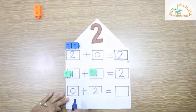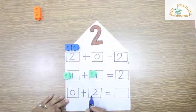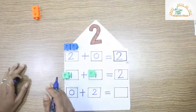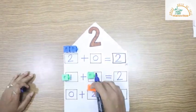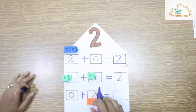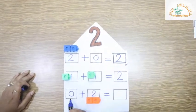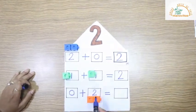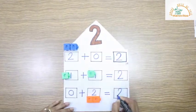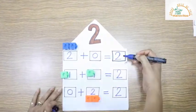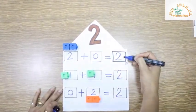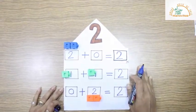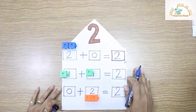Now next: 0 plus 2. I will take 2 cubes: 1, 2. You all know the value of 0. So 0 plus 2 is what? It's 2. Students, can you see the answer? It's the same. This is called adding fact for 2.